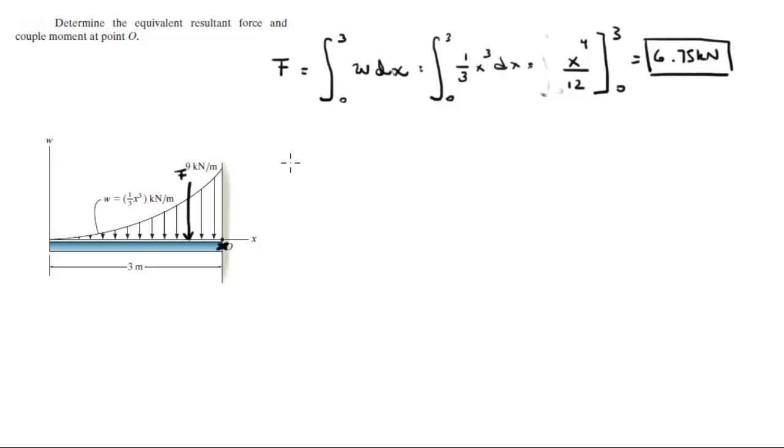So now that we have the equivalent force we can find this distance x bar by doing the integral of x times the function dx from 0 to 3 over the integral from 0 to 3 of the function dx. Now the bottom we already found up here; we know that the integral of the function from 0 to 3 is 6.75.